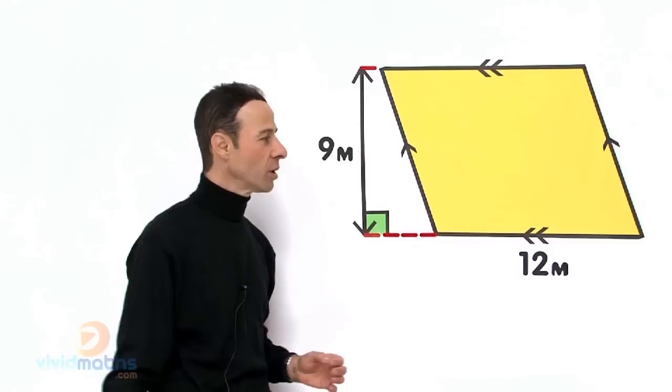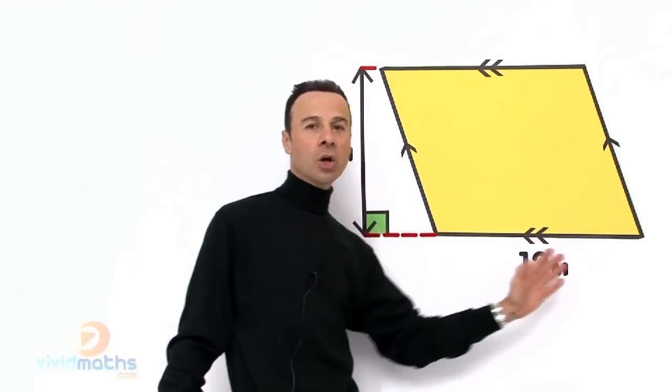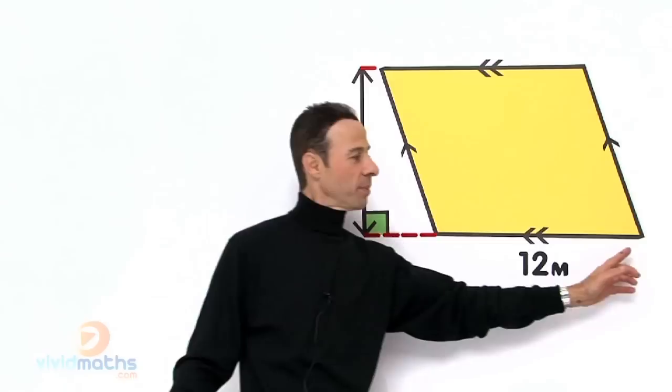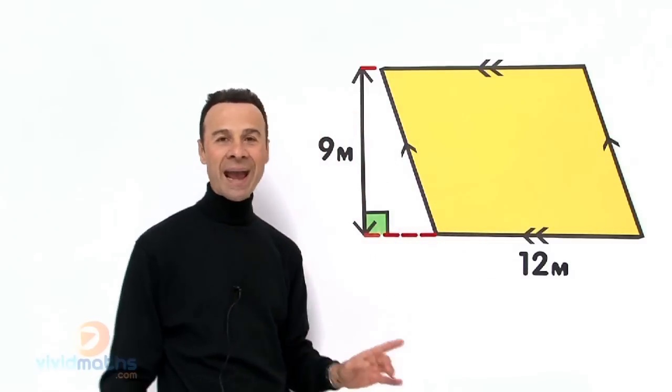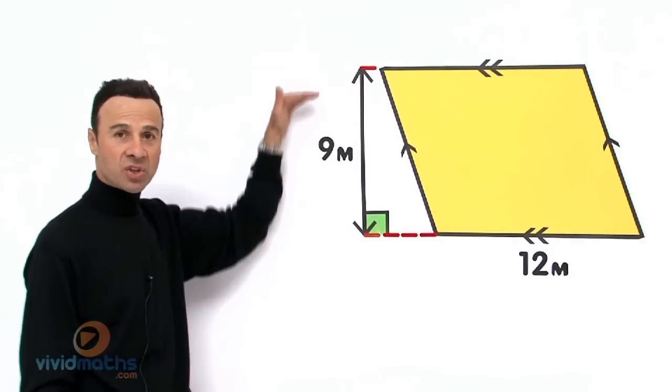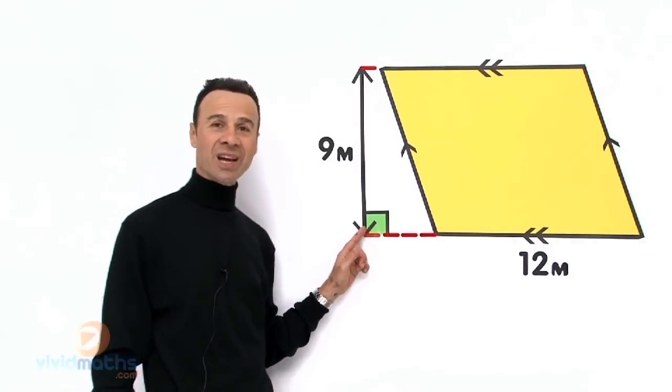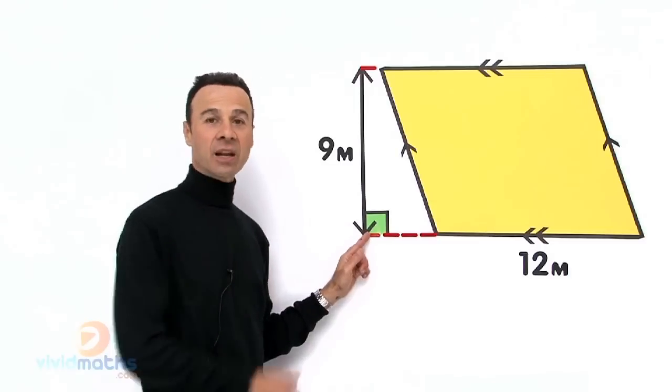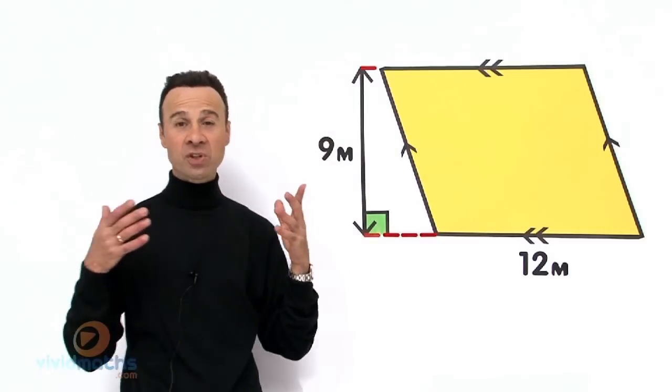So let's take a closer look. We have a base here of 12 meters—that's the base from here to here, from corner to corner. And the perpendicular height is across here and it's 9 meters. Now it's perpendicular, it's at 90 degrees, and it has to be perfectly vertical in order for this to work.